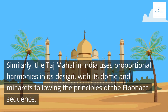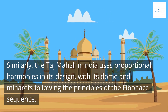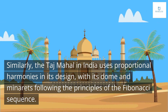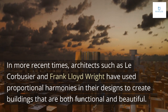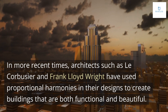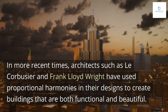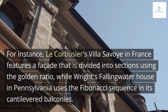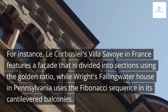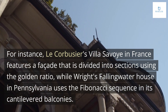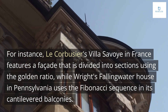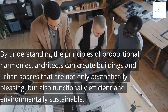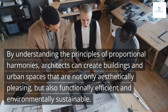Similarly, the Taj Mahal in India uses proportional harmonies in its design, with its dome and minarets following the principles of the Fibonacci sequence. In more recent times, architects such as Le Corbusier and Frank Lloyd Wright have used proportional harmonies to create buildings that are both functional and beautiful. Le Corbusier's Villa Savoye in France features a facade divided into sections using the golden ratio, while Wright's Fallingwater house in Pennsylvania uses the Fibonacci sequence in its cantilevered balconies.